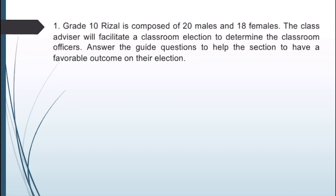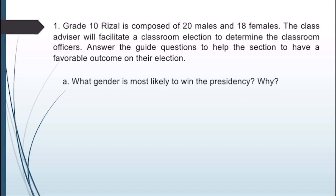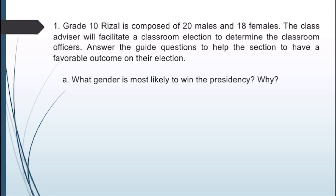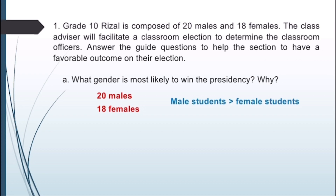For our first example: a Grade 10 class is composed of 20 males and 18 females. The class advisor will facilitate a classroom election to determine the class officers. The first question is: what gender is most likely to win the presidency, and why? The most likely to win the presidency is a male student, because the sample space of male students is greater than the sample space of female students.